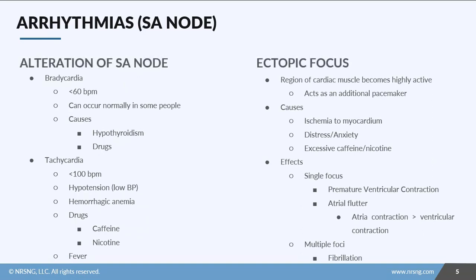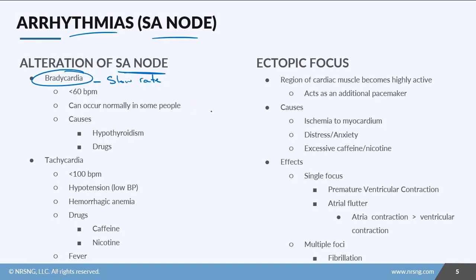The heart normally contracts and beats in a rhythm. Sometimes that doesn't happen, and when it doesn't, we call this an arrhythmia. Looking at arrhythmias of the SA node: the first one is bradycardia, which is a slow rate — less than 60 beats per minute. This occurs normally in some people, and you can find it in endurance athletes and people with high levels of physical fitness who just have low heart rates.